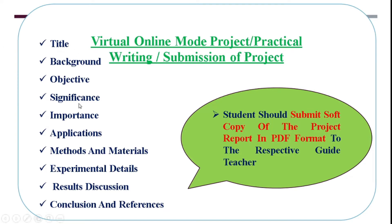While writing or submitting this project, students should submit it online. While writing the project, students should take care that the project includes: title, background, objective, significance, importance, applications, materials and methods, experimental details, and result and discussion. All these details should be included, and this particular project is submitted to the respective guide by soft copy or in report in PDF format.